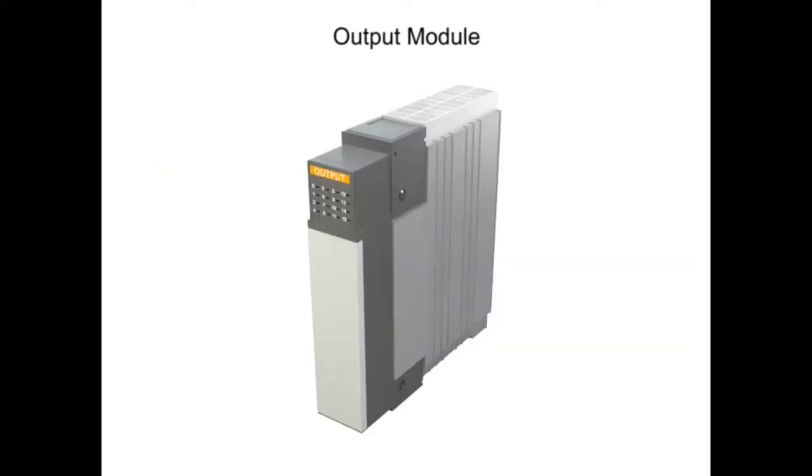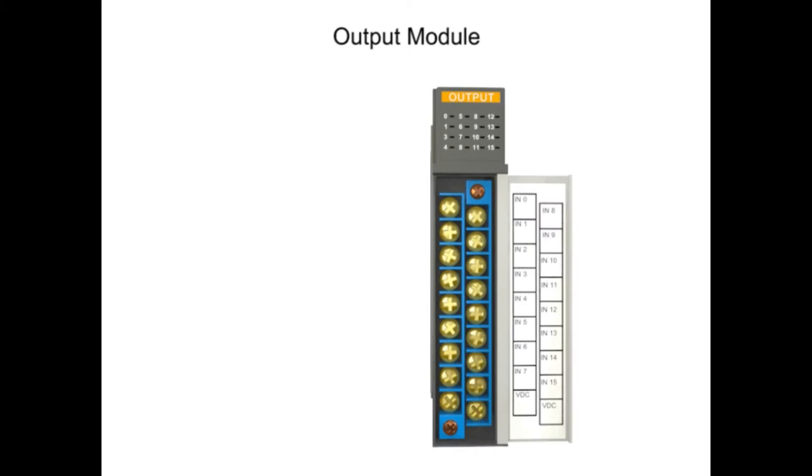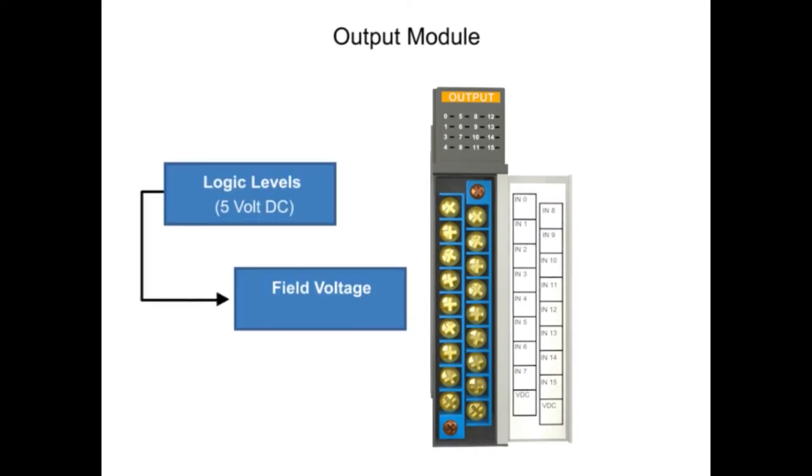Output modules perform the same function, but in reverse order, where 5-volt DC is converted to field voltages to control devices, such as 120-volt relay coils.